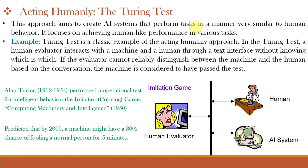The next approach is acting humanly, where AI systems perform tasks in a very similar manner to human behavior and try to achieve human-like performance. The most appropriate example for this is the Turing test. Alan Turing performed the operational test of the imitation game or copying game in 1950. Here, the AI system tries to copy human behavior. A human evaluator interacts with both a machine and a human through a text interface, with all three isolated. The evaluator asks questions and if they cannot differentiate whether the response is from the human or the system, the machine is considered to have passed the test — this is acting humanly.